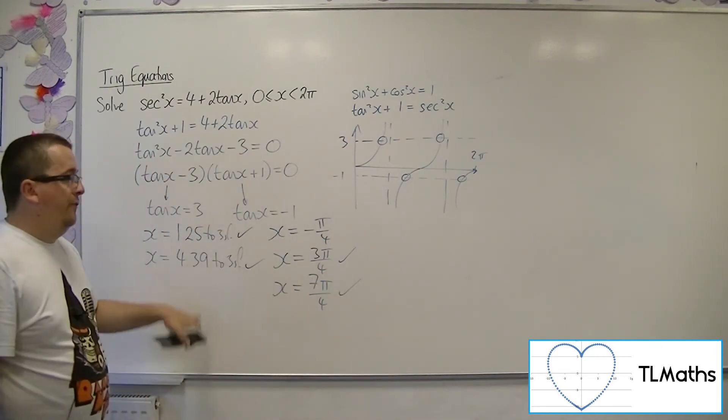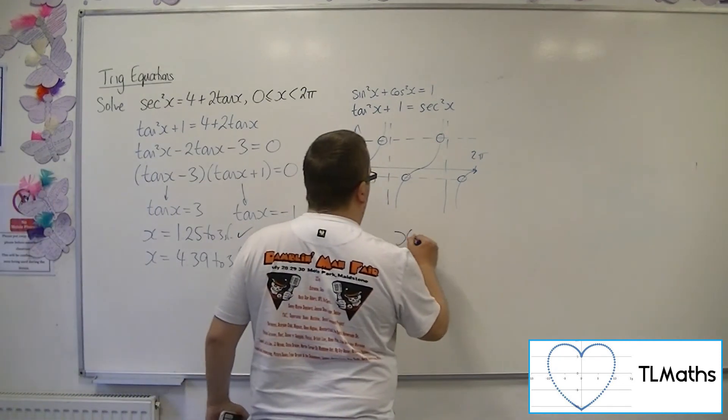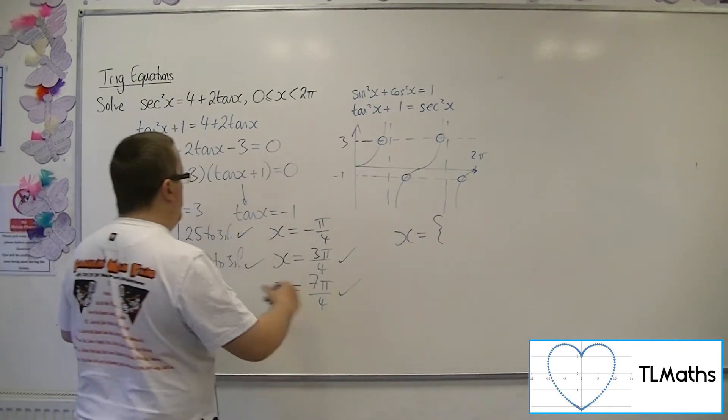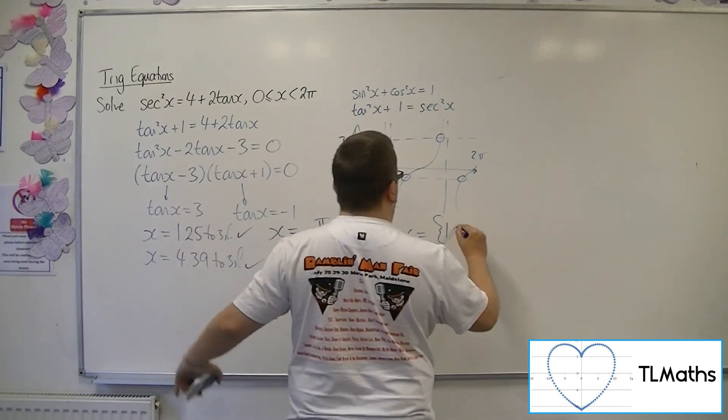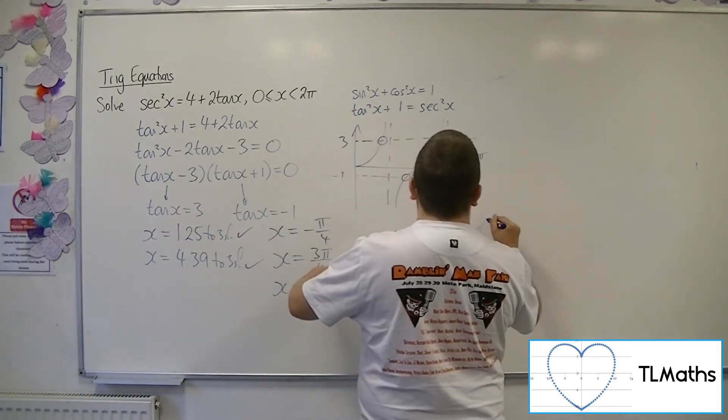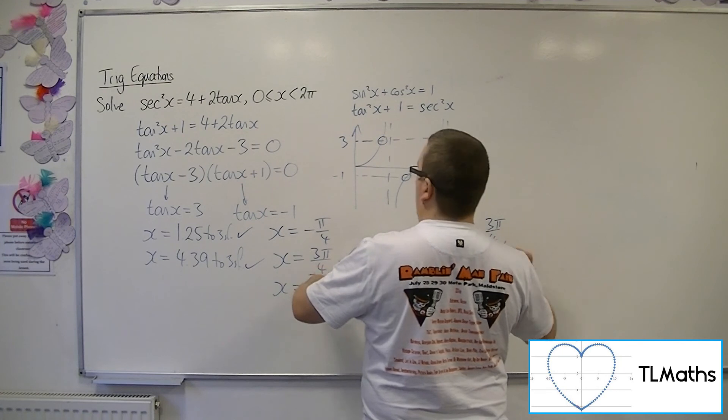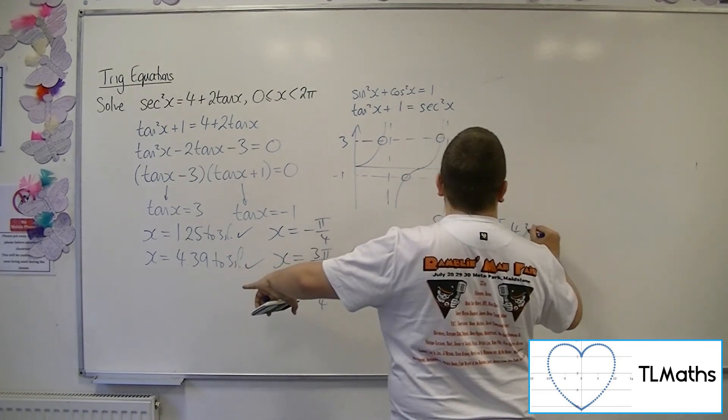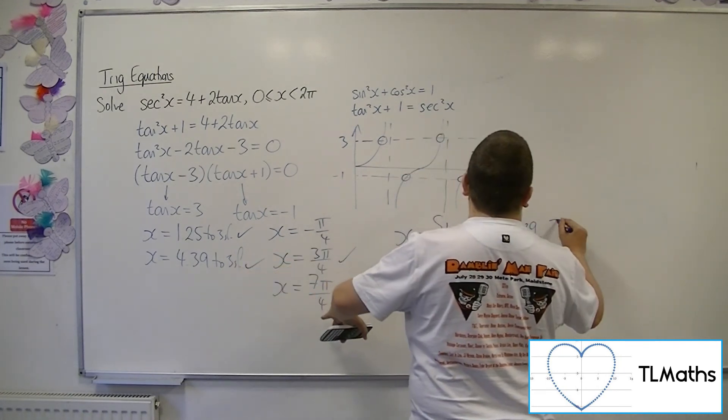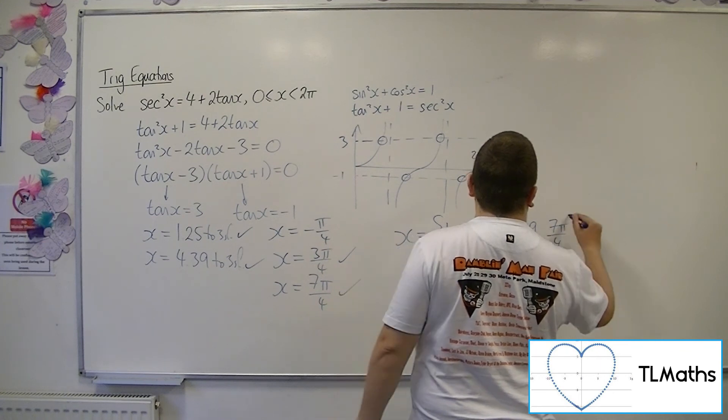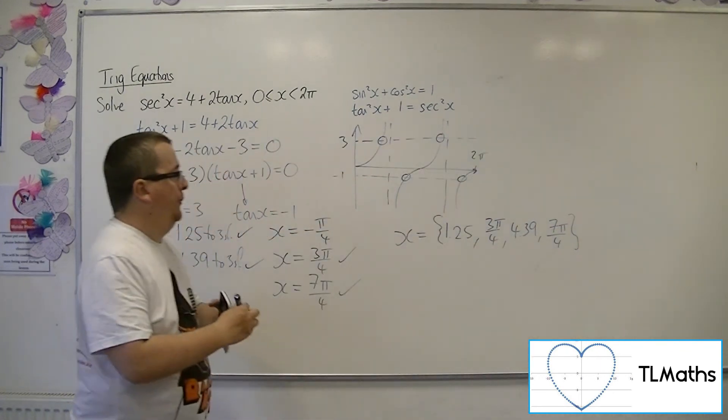So I have the four solutions that solve the original problem. In order of size, I've got 1.25 to 3 sig figs, 3 pi over 4, 4.39, and 7 pi over 4. And they are the four solutions.